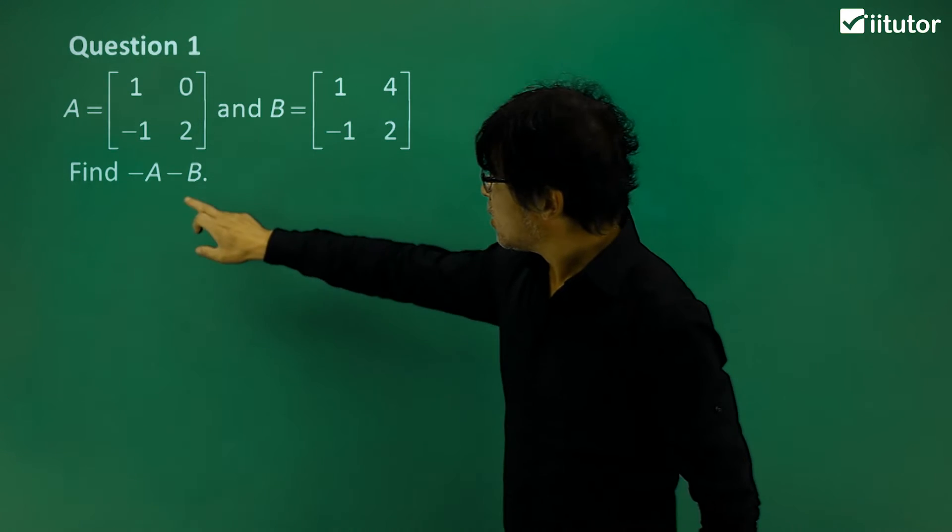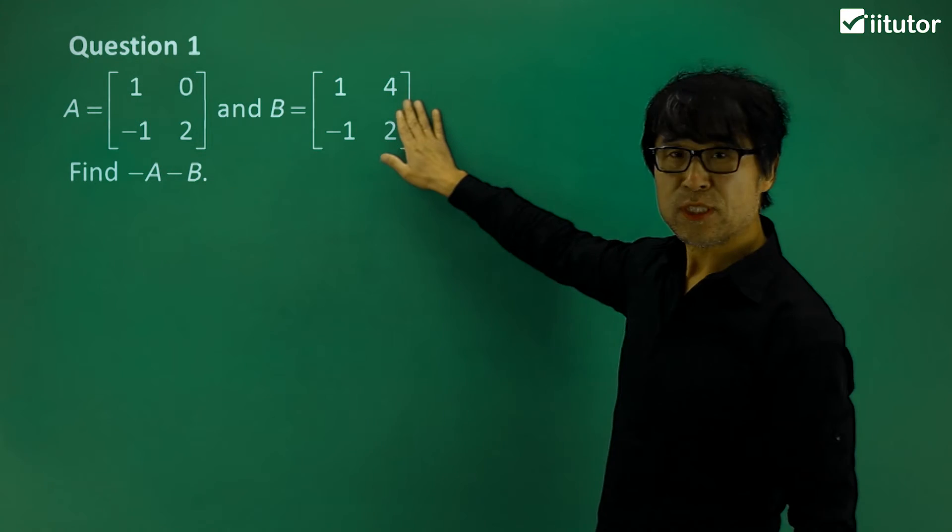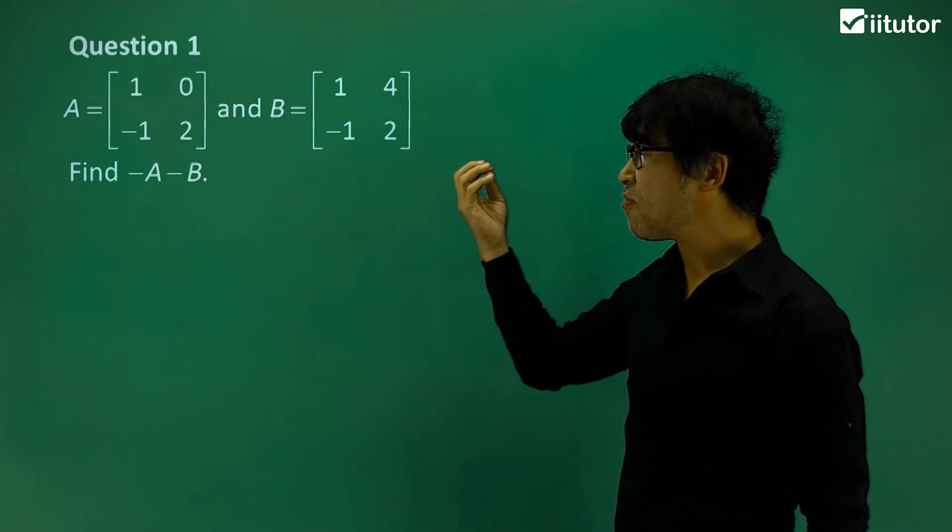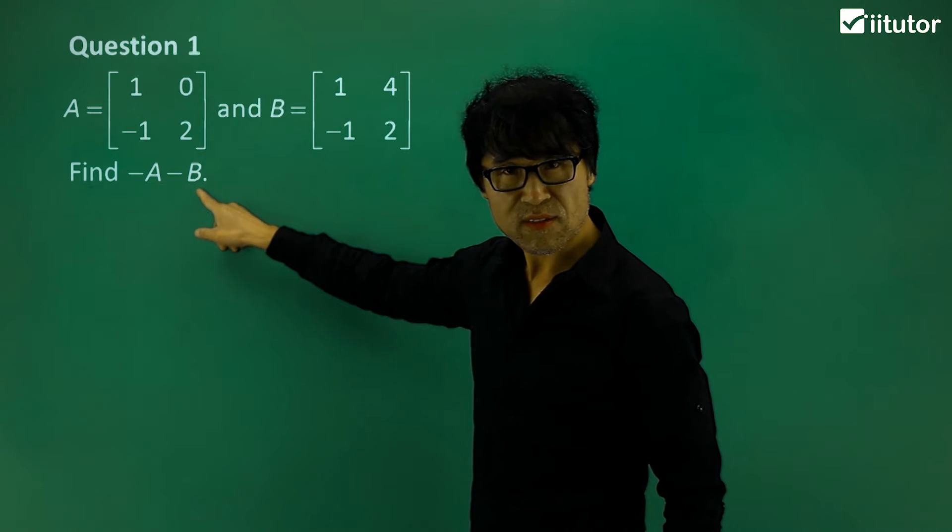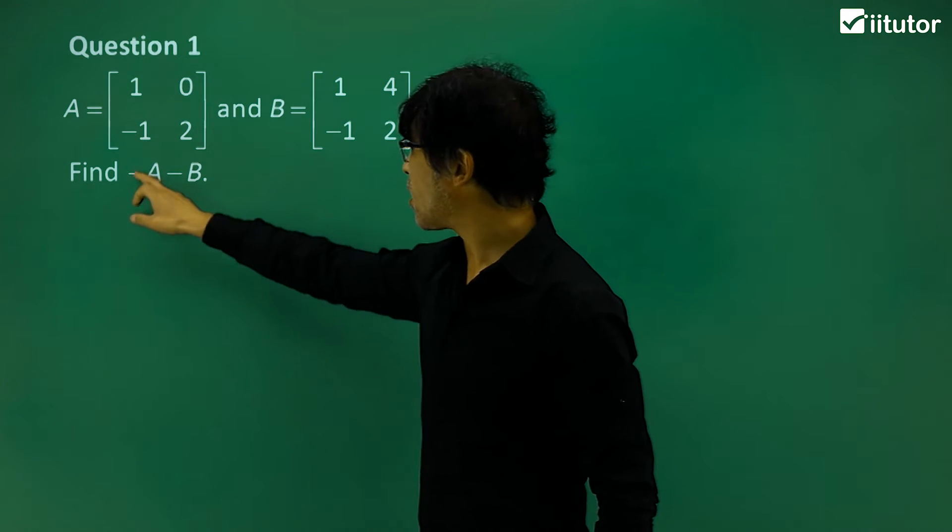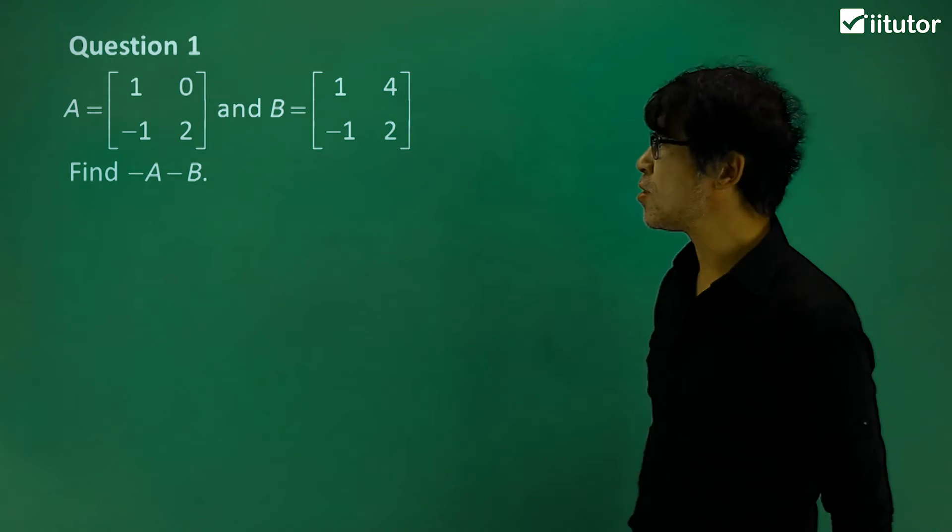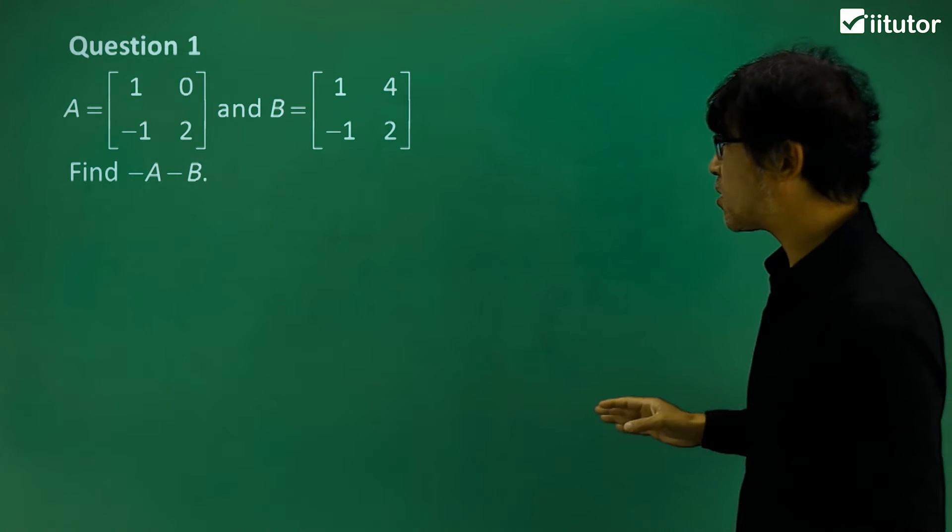So here, we have two matrices given, so we're going to perform the operation, negative A minus B. Negative A minus B, it's like negative A, negative A.